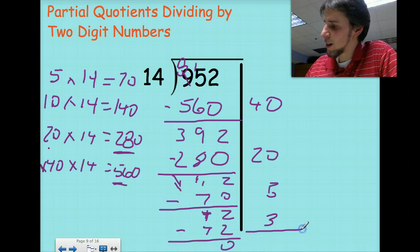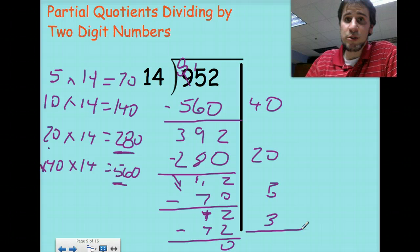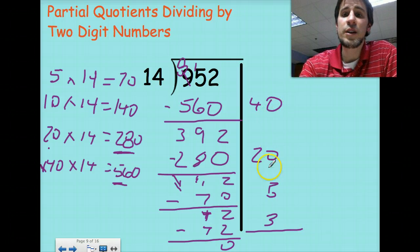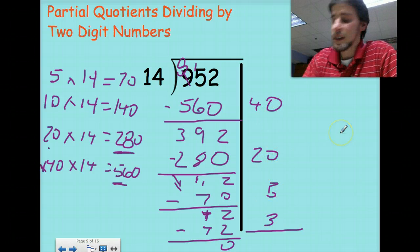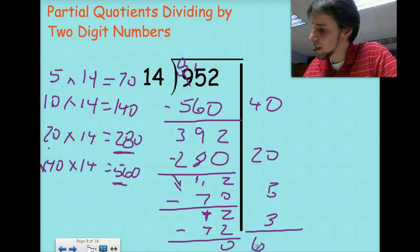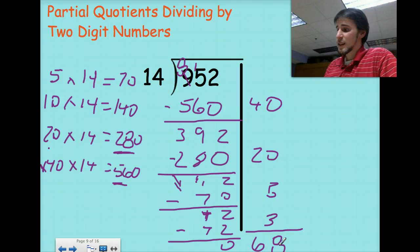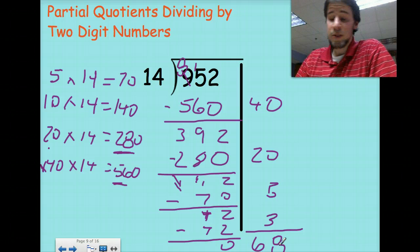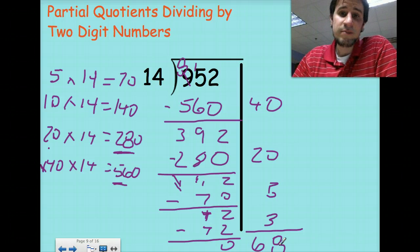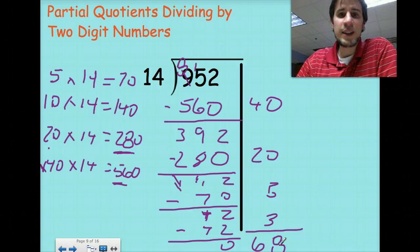So now I can add all those partial answers. And if you use different numbers here, that's okay, as long as you got 68. Okay, so 68 with no remainders, that's what your answer is.